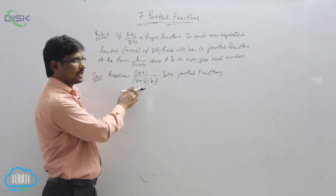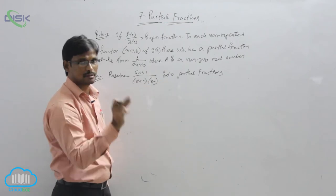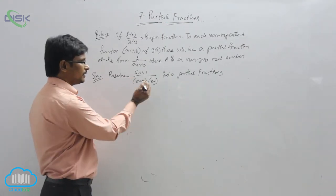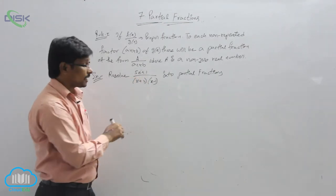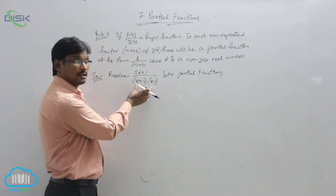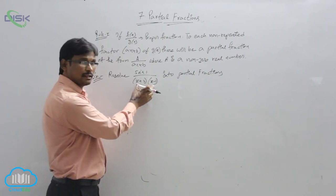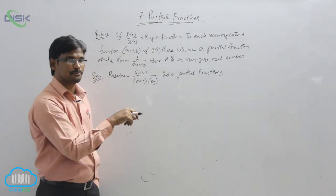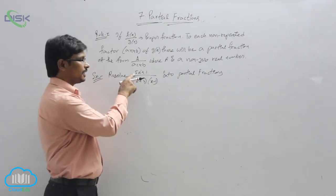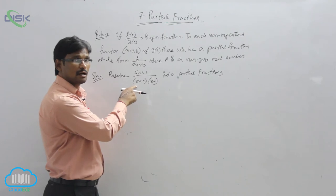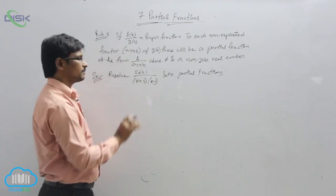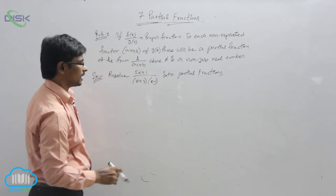Observe the degree of the problem. They are asking to convert into partial fractions, meaning the sum of different terms. The degree of the numerator is 1. The degree of the denominator: if you multiply the two factors you get x times x, which is x squared, so the degree is 2. Clearly the degree of the numerator is less than the degree of the denominator, so it is a proper fraction.